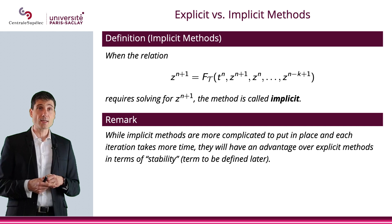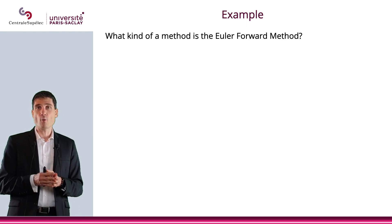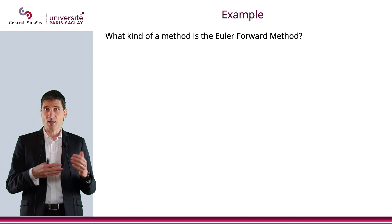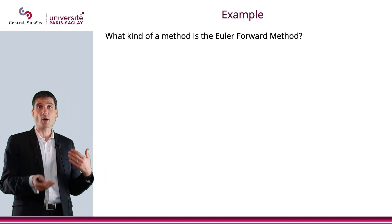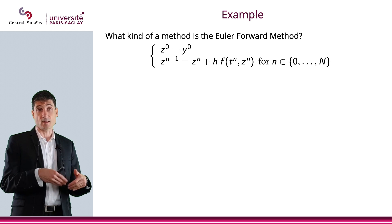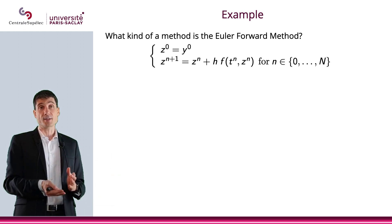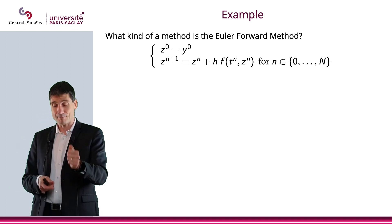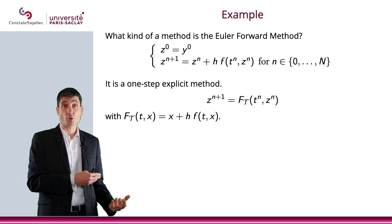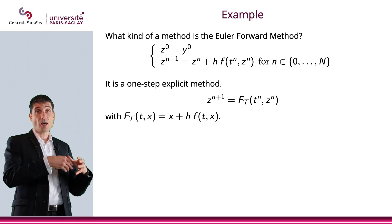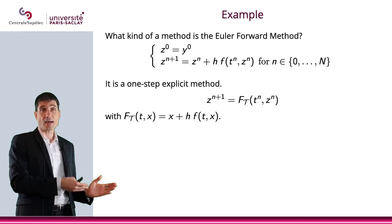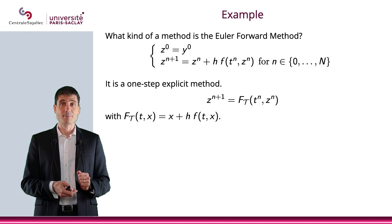Let me give you an example. We talked about the Euler-forward method in the previous video. Is that a k-step method? Is it implicit or explicit? As a reminder, the Euler-forward method is z^0 = y^0 and z^{n+1} = z^n + h·f(t^n, z^n). So obviously it is a one-step explicit method because z^{n+1} can be expressed as F_T(t^n, z^n) where F_T(t, x) = x + h·f(t, x).